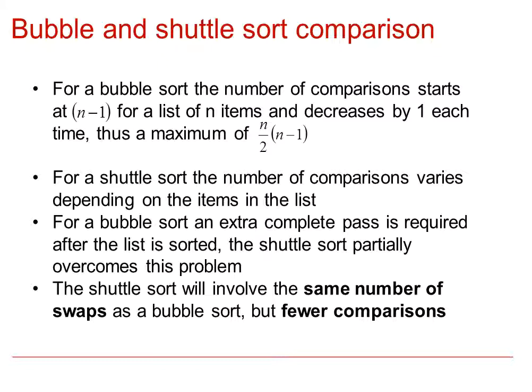Whereas for a shuttle sort, the number of comparisons vary depending on the items in the list. Another comparison is that for a bubble sort, an extra complete pass is required after the list is sorted. And the shuttle sort partially overcomes this problem and therefore is a little bit more efficient. It can be seen that the shuttle sort will involve the same number of swaps as a bubble sort but fewer comparisons. In that second example, for the bubble sort, there were 27 comparisons and 16 swaps whereas the shuttle sort had 22 comparisons and 16 swaps for the same list.